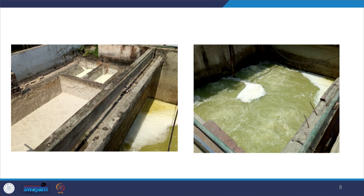We can see photographs of effluent generated from actual milk processing industries. The water coming into the unit is milkish in nature because it contains a lot of milk. During treatment we can also see a lot of milk present in the water. Since many plants are very small, they have little eagerness toward treatment and many times discharge wastewater without treatment.